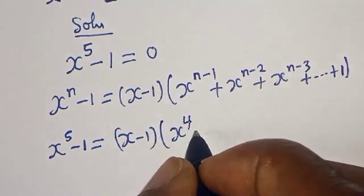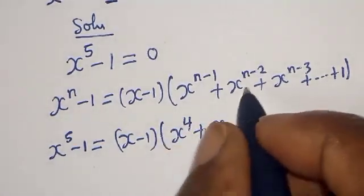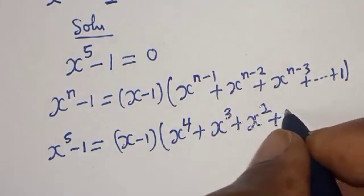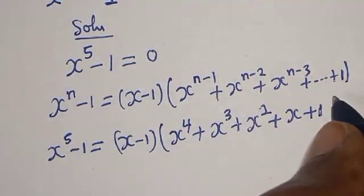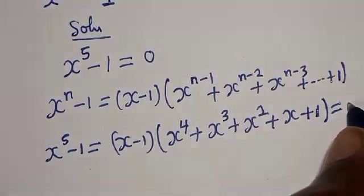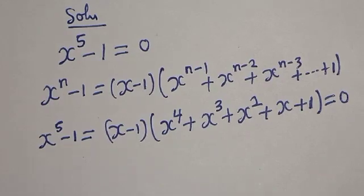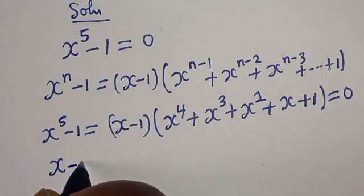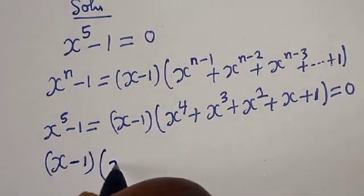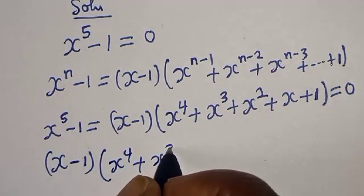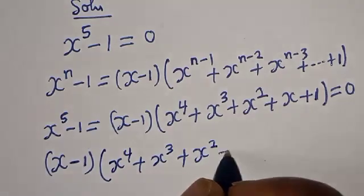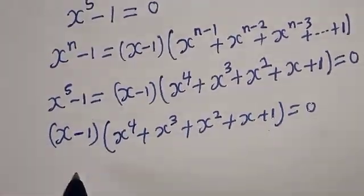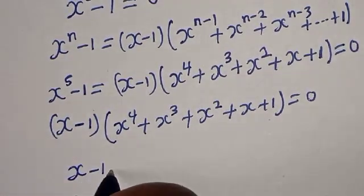So x to the power 5 minus 1 equals x minus 1, bracket: x to the power 4 plus x to the power 3 plus x squared plus x plus 1, is equal to 0. Now there are two cases here.